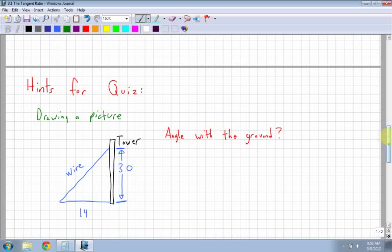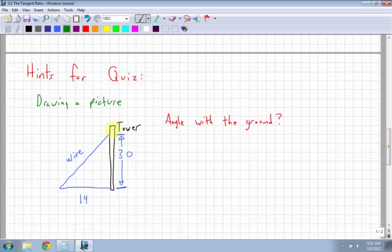There's a question on the quiz that gives you a description of a tower and says a guy wire is attached to the tower 30 meters above the ground, and it says, what is the angle with the ground? Keep in mind that angle with the ground is the angle down here. So you're actually looking for this angle down here, theta.